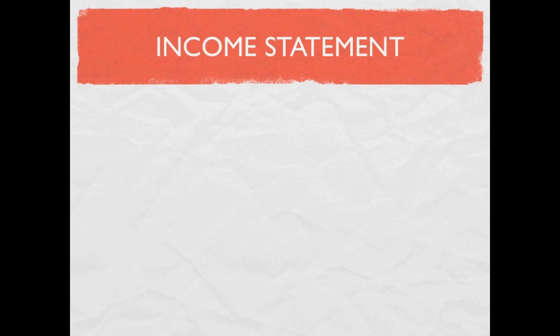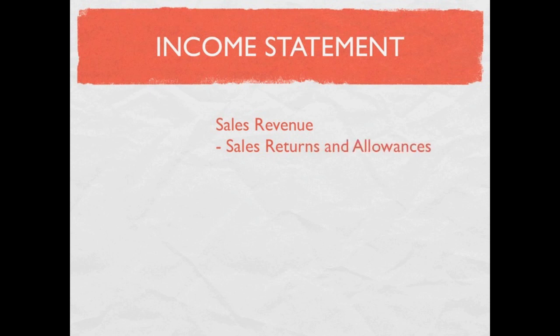Let's look at our merchandising company income statement. First, we have sales revenue — unlike a service company that has service revenue, here we're selling a product so it's called sales revenue. From sales revenue we're going to have two new accounts: one is called sales returns and allowances, and one is called sales discounts.